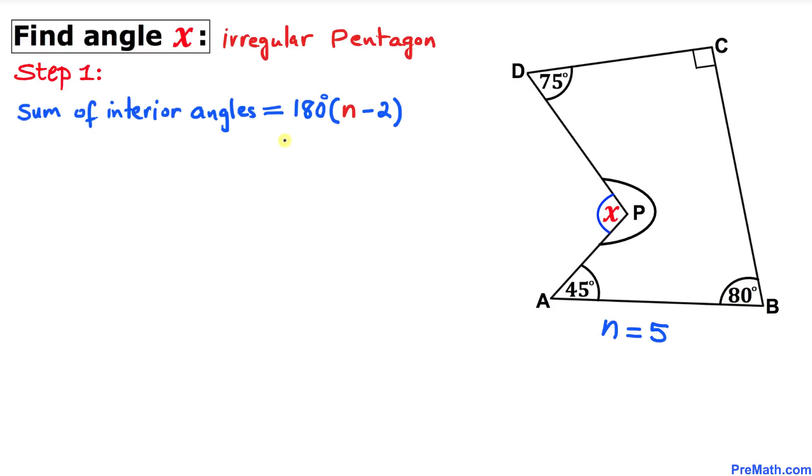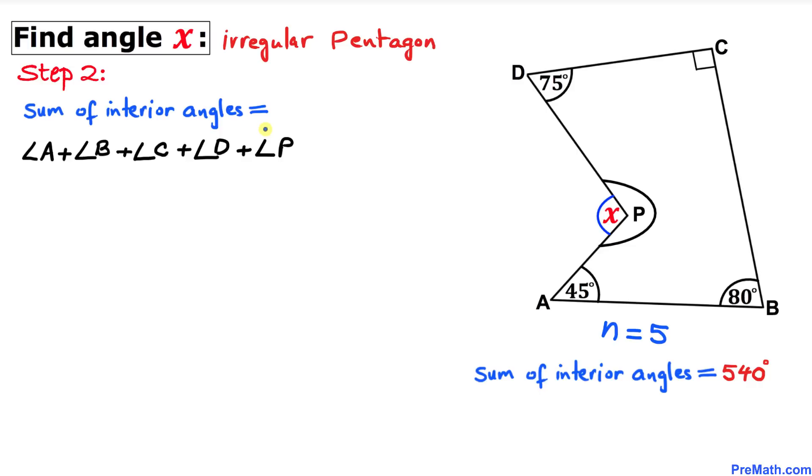Therefore, the sum of interior angles equals 180 degrees times (5 - 2), which gives us 540 degrees. Here's our next step: the sum of interior angles.